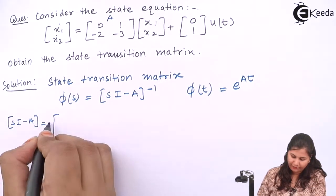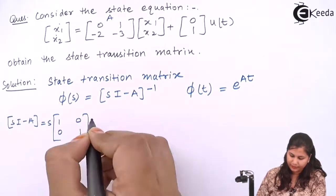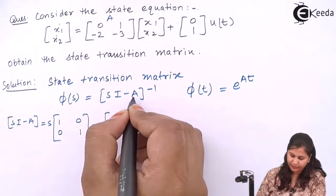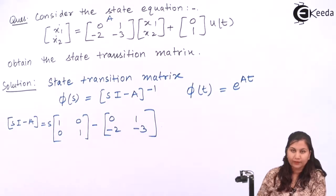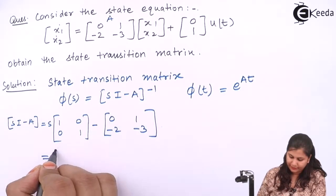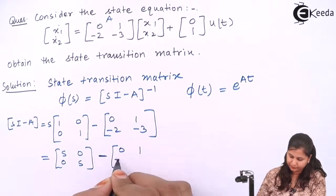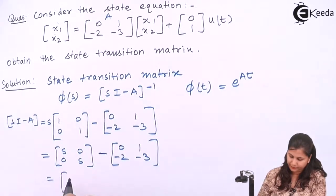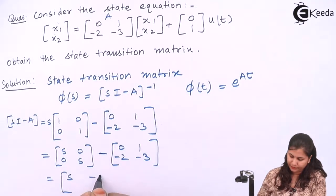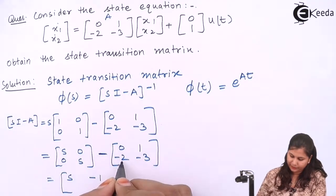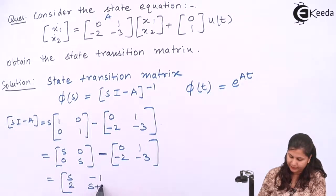We have s multiplied with the identity matrix [1, 0; 0, 1], then minus matrix A. So sI - A will be [s, -1; 2, s+3], since s minus 0 is s, 0 minus 1 is -1, 0 minus (-2) is 2, and s minus (-3) is s plus 3.